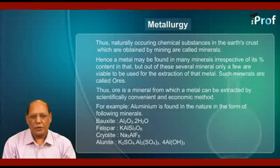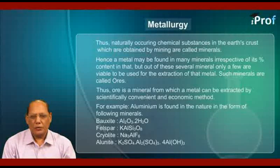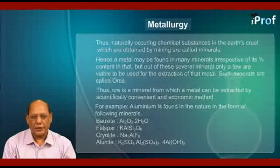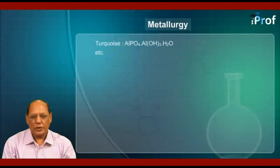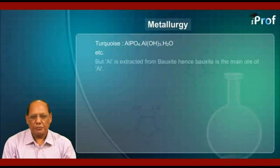For example, aluminium is found in nature in the form of the following minerals: Bauxite (Al2O3·2H2O), Felspar (KAlSi3O8), Cryolite (Na3AlF6), Alunite (K2SO4·Al2(SO4)3·4Al(OH)3), Turquoise (Al2O3·H2O), etc. But aluminium is extracted from bauxite, hence bauxite is the main ore of aluminium.